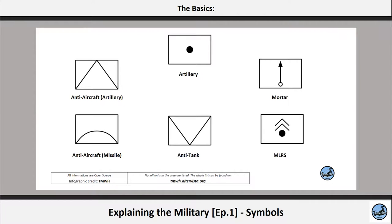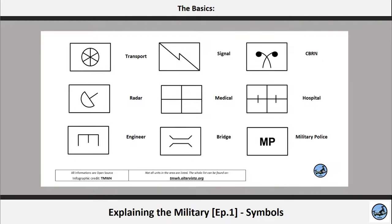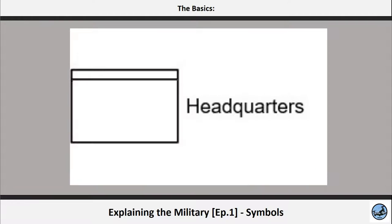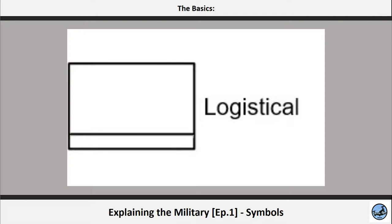Motor units are a dot with an arrow, reminiscent of a stylized motor. Rocket artillery is a dot with two lines, remembered because rocket artillery usually has more than one barrel firing at the same time. Medical units: this symbol represents a hospital. Headquarters are simply a rectangle on top, remembered because they are at the top of all units. Logistical units are the opposite of headquarters, with a rectangle on the bottom, as they are the foundation for all military operations.